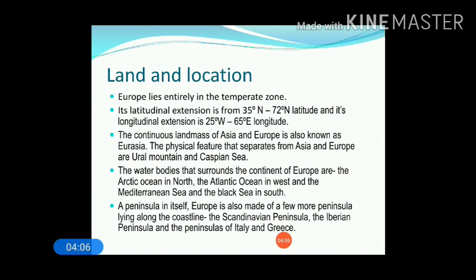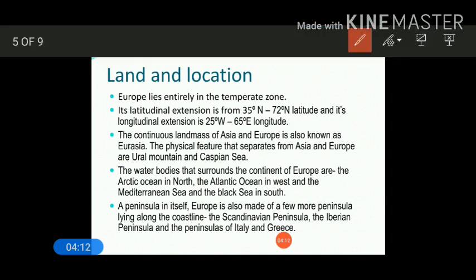The continuous landmass of Europe and Asia is also known as Eurasia — a continuous landmass between Asia and Europe, which is why it is termed Eurasia. The physical features that separate the continent of Asia and Europe are the Ural Mountains and the Caspian Sea. Remember these two physical features that separate Asia and Europe: Ural Mountains and Caspian Sea.